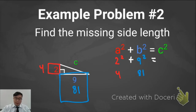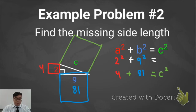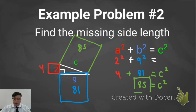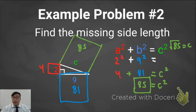The Pythagorean Theorem says if I combine A squared and B squared — these two smaller squares — they're going to add up to C squared. So 4 plus 81 is going to add up to 85. But I'm not done yet because I want the side length, not the area. What number times itself equals 85, or what's the square root of 85? I'm going to leave my answer as the square root of 85.